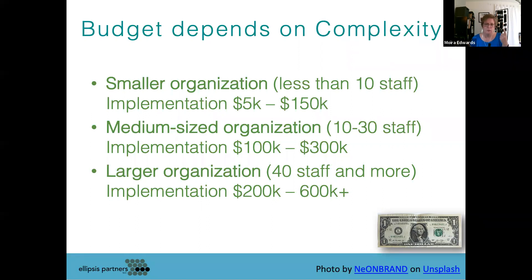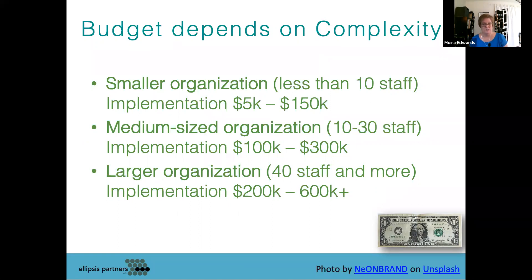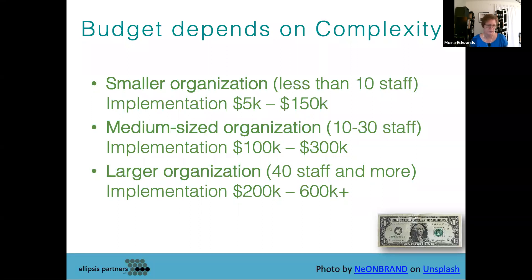With ten staff you can be doing some pretty complex things. The higher up you get in complex operations — different programs, very complex events — the more you're going to have to configure a system and probably migrate data from your prior system, and that's when you get to that higher end of up towards $150,000. For medium-sized organizations — around ten to thirty staff — we see implementation ranging around $100,000 to $300,000, depending on all the different things you need to do to make your operations work well.